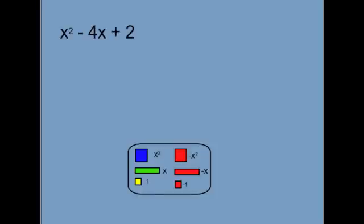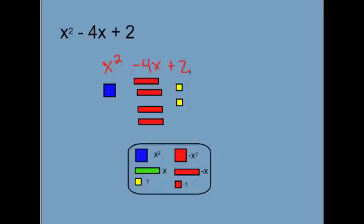For our next example, we'll try x squared minus 4x plus 2. And again, all we're doing here is modeling. So we'll start off with x squared, and then minus 4x is going to be 4 of the negative x's. And then plus 2, we'll take two of the yellows. So now, we have x squared minus 4x plus 2.